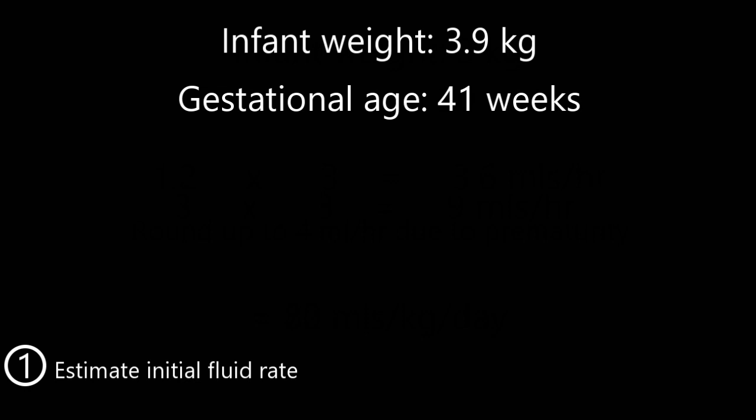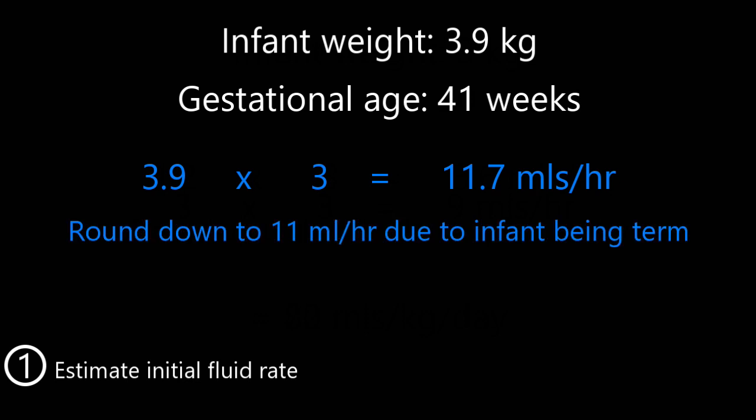Last example: you admit a 41-week, 3.9 kilo baby. 3.9 times three is 11.7. Because it's a term baby, you decide to round down and run it at 11 mL an hour, which gives just over 60 mL per kilo per day. Very easy, but really super helpful — a good way to just get fluids running until all the calculations are done.